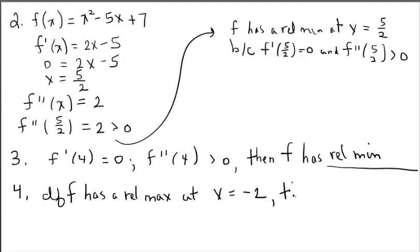Well, what has to be true? Well, first of all, f prime at negative 2 has to either equal 0 or does not exist. And I need another blank here.